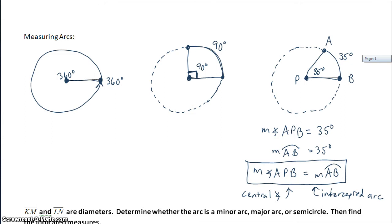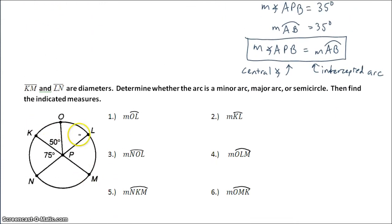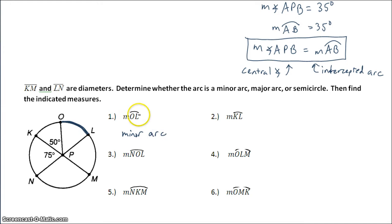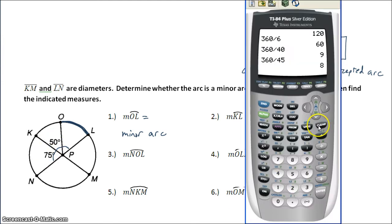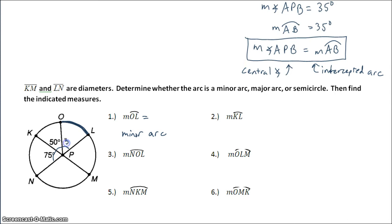Let's use this to answer some problems. K, M, L, N are diameters. Determine whether each arc is a minor arc, major arc, or semicircle, then find the indicated measure. Arc OL is less than half, so it is a minor arc. LN is a diameter, so this entire angle is 180 degrees. Taking 180 minus 75 minus 50 gives the measure of the central angle as 55 degrees, so the intercepted arc OL is also 55 degrees.